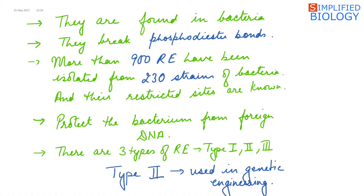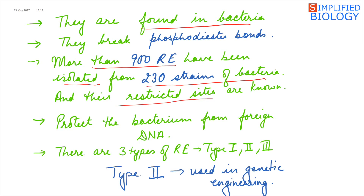Restriction endonucleases are found in bacteria. More than 900 restriction endonucleases have been isolated from 230 strains of bacteria, and their restriction sites have been identified. There are 3 types of restriction endonucleases: Type 1, Type 2, and Type 3, of which Type 2 is used in genetic engineering.